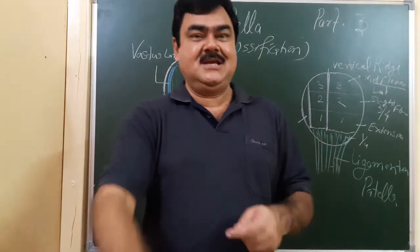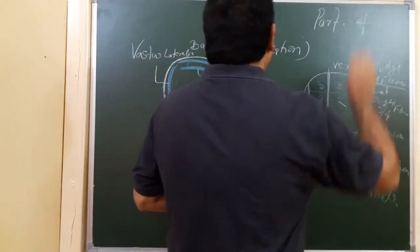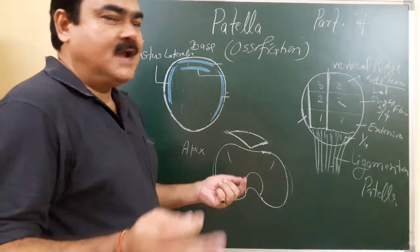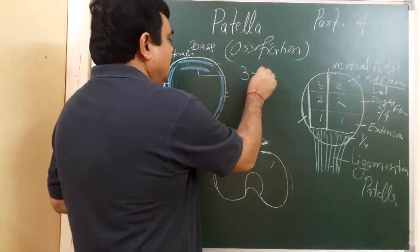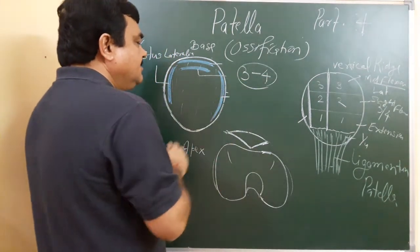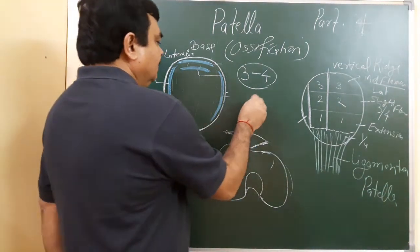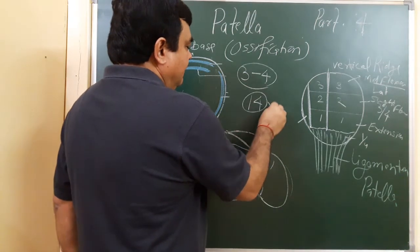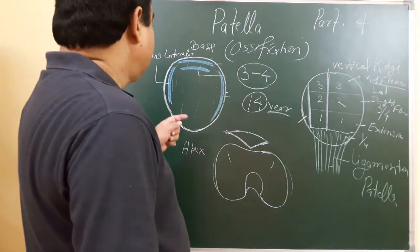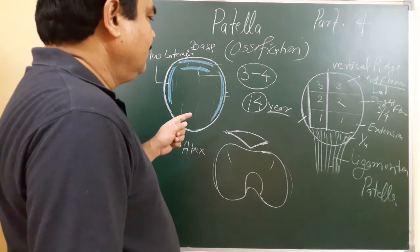Ossification of the patella — part four. The patella ossifies in several centers. The centers appear during the third to fourth year of life and these fuse with each other around the fourteenth year of life.